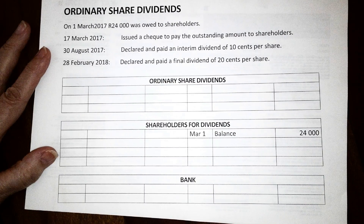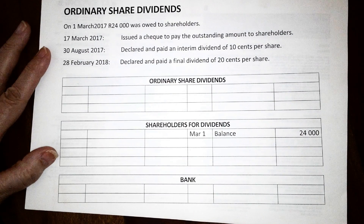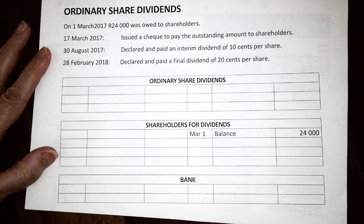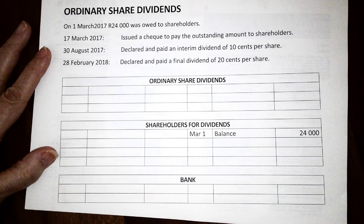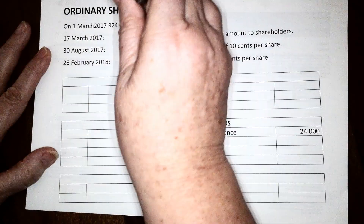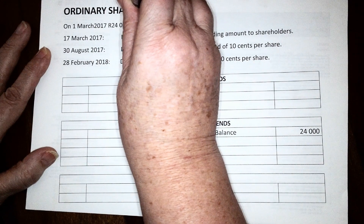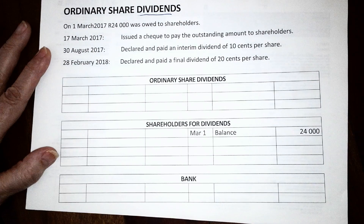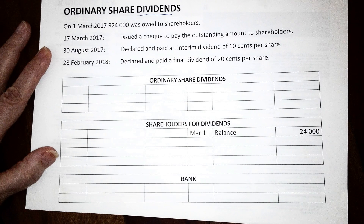In a sole trader, the owner will receive all the profits. In a partnership, the profits will be divided between the partners in their profit-sharing ratio. In a company, the shareholders provide the capital to the business and they want to share the profits of the business. The method used to share the profits of the business is by issuing dividends, so for every share that you have, you will receive a dividend.